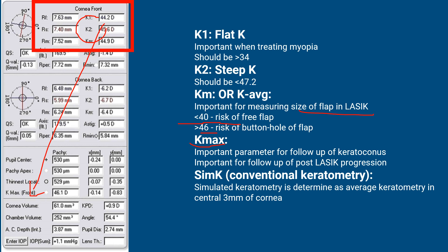SimK or simulated keratometer is not commonly included nowadays. It is determined as an average keratometer in the central 3 mm of the cornea. Nowadays, in the topography printout you have K1, K2, and Kmax.